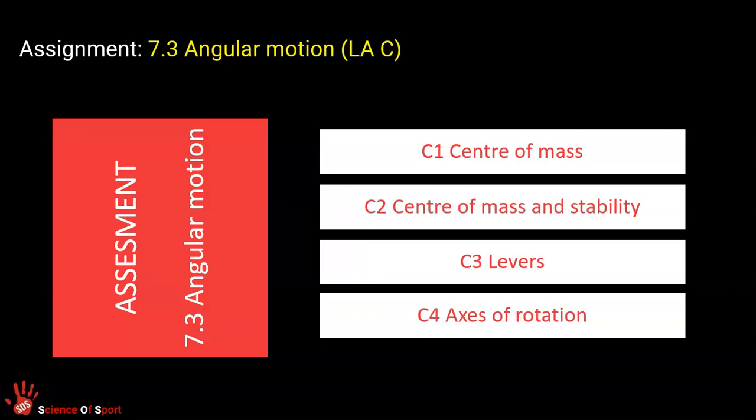The final assignment in this unit, 7.3, is angular motion. A sort of parallel to linear motion. Linear is more straight line motion. Angular motion is motion around an axis.